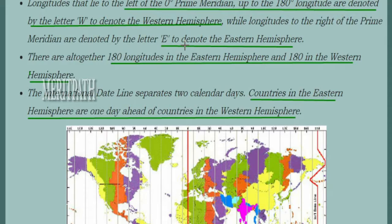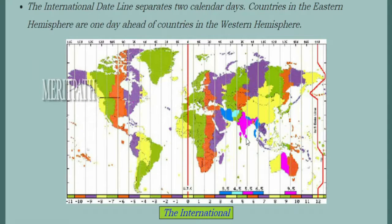There are 180 degrees of longitude on the east and 180 degrees on the west, making 360 degrees in total. The International Date Line separates two calendar days — countries in the Eastern Hemisphere are one day ahead of countries in the Western Hemisphere. This is why India is ahead of American countries in terms of time and date.